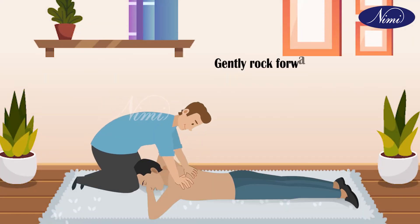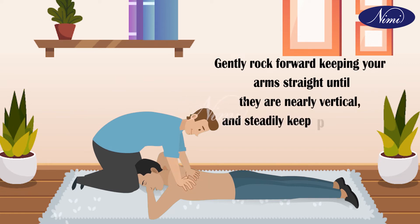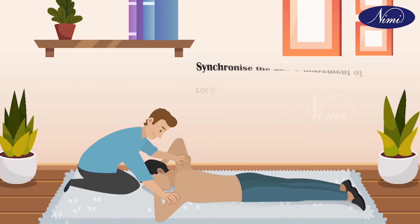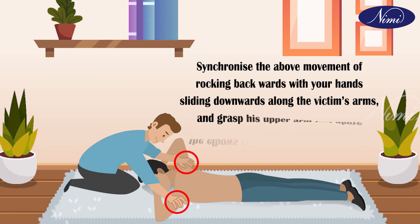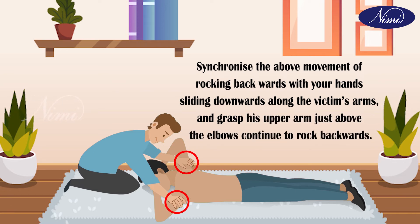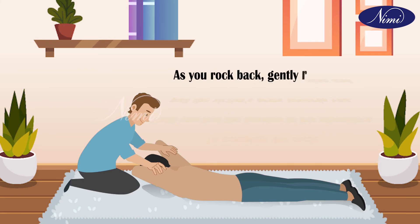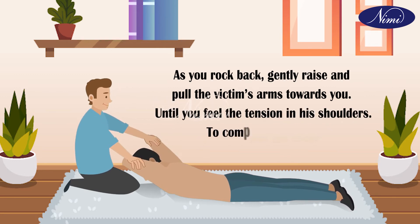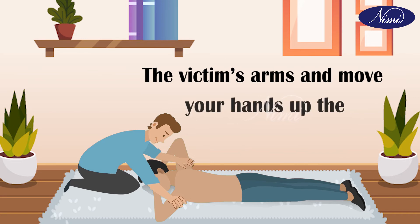Gently rock forward, keeping your arms straight until they are nearly vertical, and steadily press the victim's back to force the air out of the lungs. Then rock backwards with your hands sliding downwards along the victim's arms, and grasp his upper arms just above the elbows. Continue to rock backwards, and as you rock back, gently raise and pull the victim's arms towards you until you feel the tension in his shoulders. To complete the cycle, lower the victim's arms and move your hands back to the initial position.